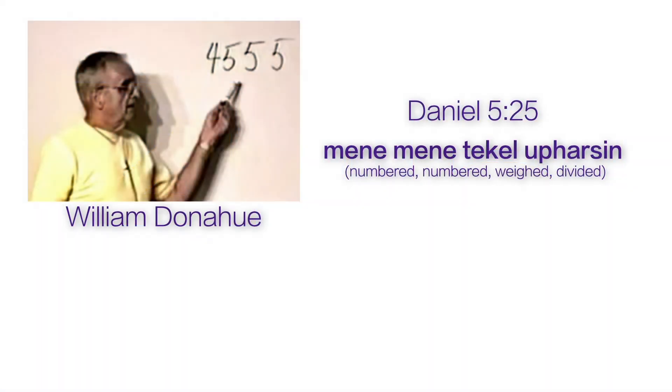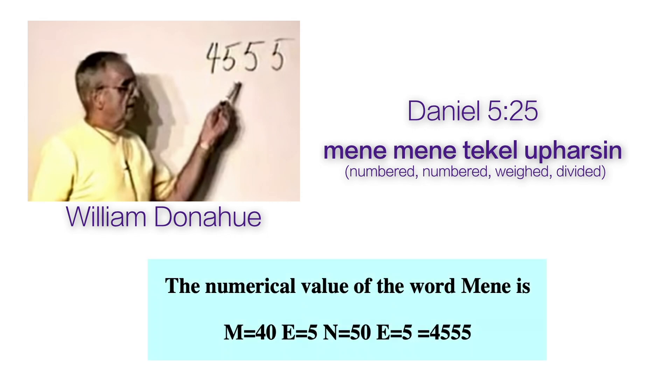And on a completely different tangent, William Donohue points out that in Daniel, chapter 5 of the Bible, the phrase written by the hand on the wall, mene mene tekel uparsin, meaning numbered, numbered, weighed, divided, has numerological significance, as the value of the word mene, or numbered, is 45.55.